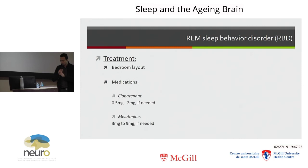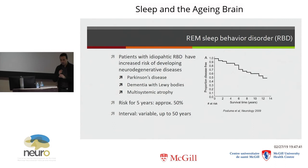Why is it important to identify RBD? Beyond the immediate safety risk, we now know from extensive research — particularly from colleagues in Montreal like Jean-François Gagnon and Ron Postuma — that patients with RBD have a tendency to develop Parkinson's disease or other neurological diseases in the years following the RBD diagnosis. This is why it's important to identify this condition: if you have it, you may need to be followed up and screened for these conditions as you age.